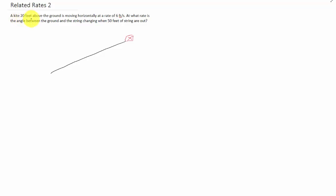Okay, this time we have a kite 20 feet above the ground. It's moving horizontally at a rate of 6 feet per second. At what rate is the angle between the ground and the string changing when 50 feet of string are out?